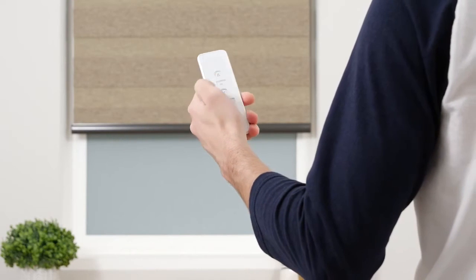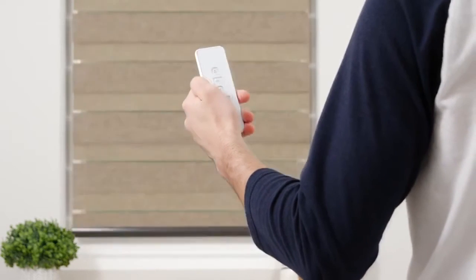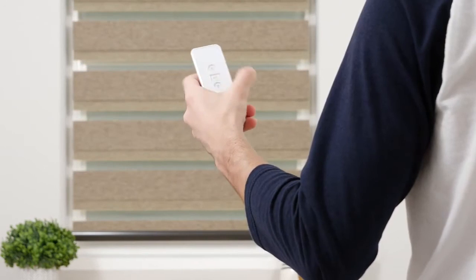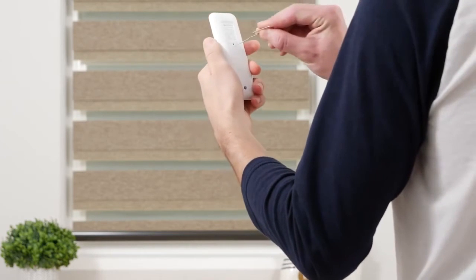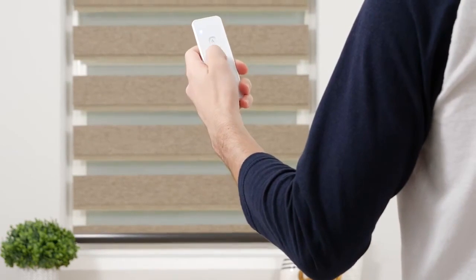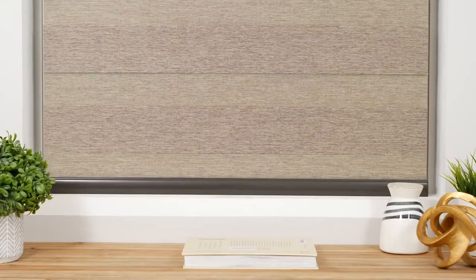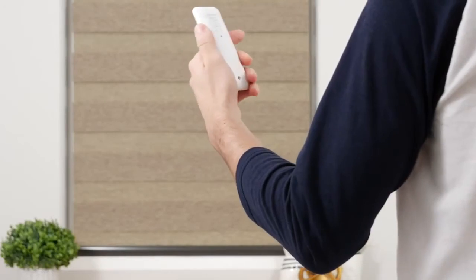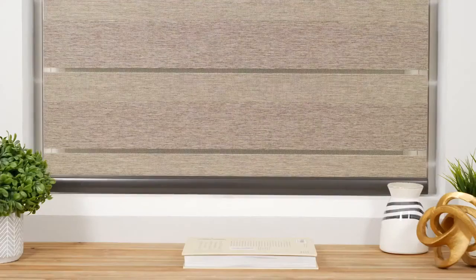Press the down button to lower the shade to the bottom limit. Press the program button on the back of your remote and the shade will jog to indicate that it is now in limit setting mode. Adjust the shade until you're satisfied with the new bottom limit. Press the program button again and the shade will jog to confirm that your lower limit is now saved.